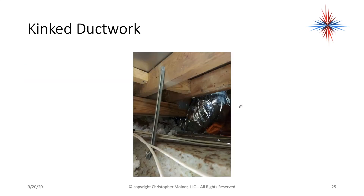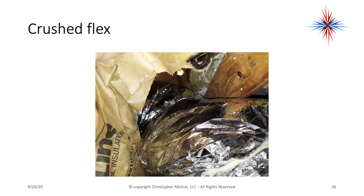One of the issues is kinked duct work. If you look closely at this picture here, you'll see that they've pulled it below a joist and clamped it between the ceiling and the joist — this is a suspended ceiling. It's cut the duct work flow to about a third of what it's supposed to be. Crushed duct work is another issue. Flex duct can't have this crushed area because it restricts airflow. Flex duct is supposed to be pulled tight and supported — it's not supposed to be kinked, crushed, and bent.